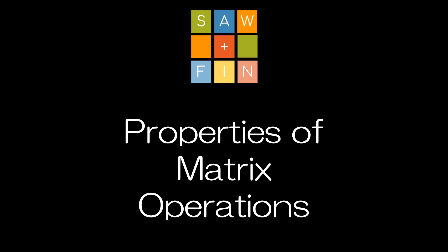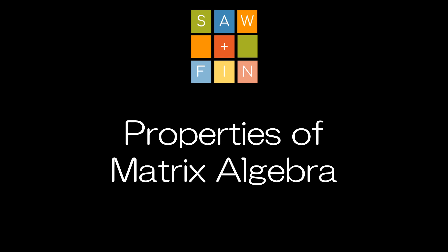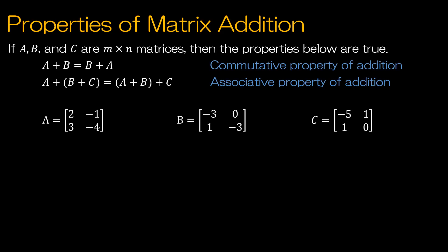Properties of Matrix Operations and Matrix Algebra. The first property we're going to look at is matrix addition. So if A, B, and C are M by N matrices, then the properties below are true.